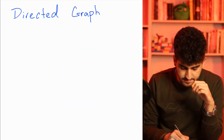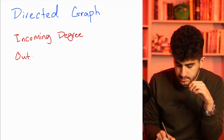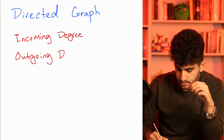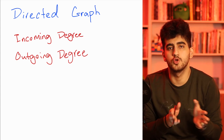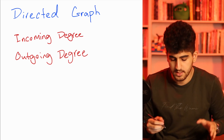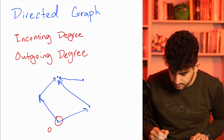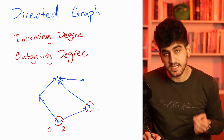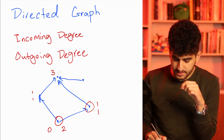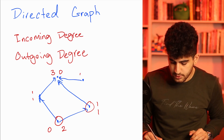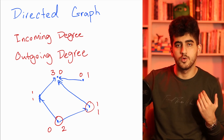In the graph, we have incoming degree and outgoing degree. The incoming degree is the number of edges which are coming to that specific vertex, and the outgoing degree is the number of edges which are going out from this vertex. For instance, if we have this graph, the incoming degree of this vertex is 0 but the out degree is 2. For this vertex, incoming degree is 1 and outgoing degree is 1. For this vertex it's 1, 1. For this vertex we have 3 incoming and 0 outgoing. And for this vertex we have 0 incoming and 1 outgoing. So in the directed graph we have additional definitions of incoming degree and outgoing degree.